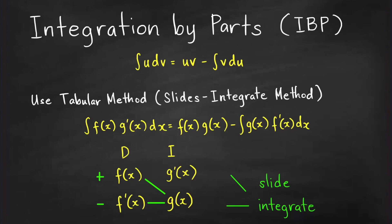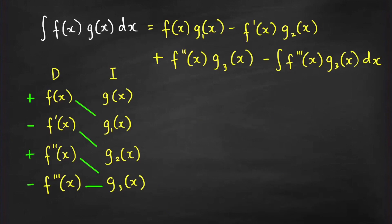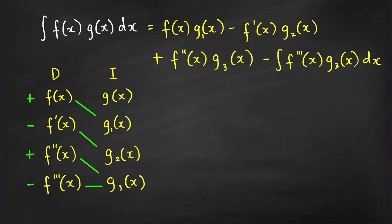To evaluate the integral of f(x)·g(x) dx using the tabular method, divide the integrand into two parts. Place f(x) in the derivative column — you'll take its repeated derivatives: f′(x), f″(x), and so on. Place g(x) in the integral column — you'll take its repeated antiderivatives: g₁(x), g₂(x), and so on.